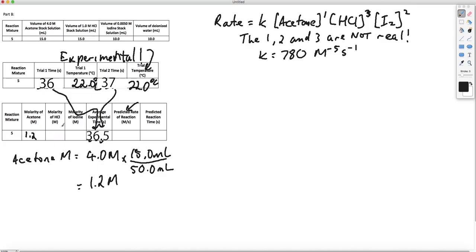The HCl I'll do in the same way. That's going to be 0.30, and the iodine is 0.0010 molar. Now I'm going to figure out this predicted reaction rate. To do that, I'm going to use the information I came up with in Part A. All of this is from Part A. But remember, this is a lot of made up information. It's not going to be what you would find.